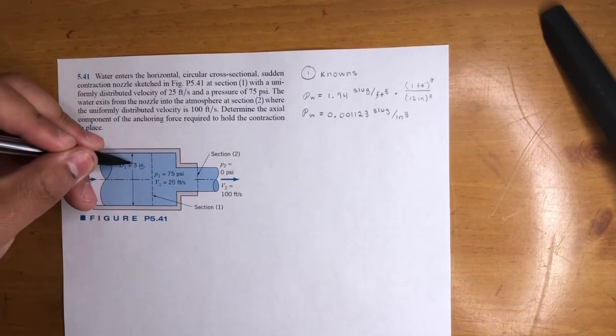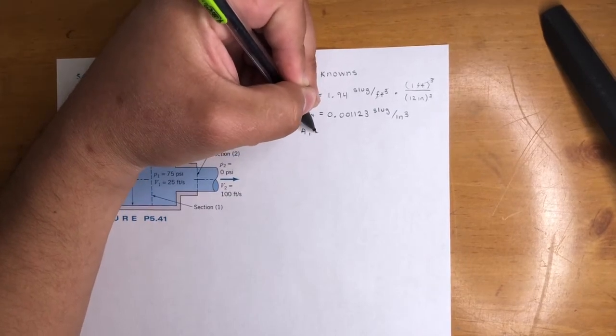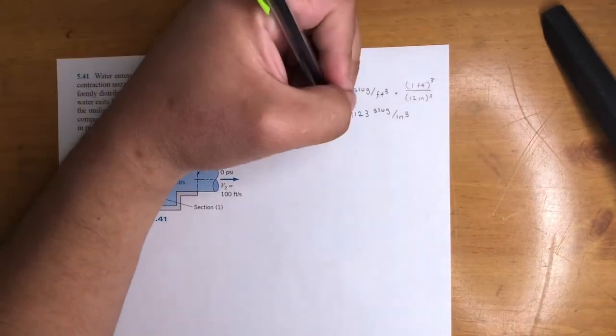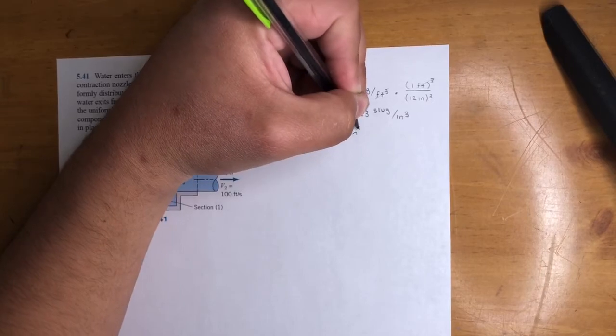They give us a diameter, three inches. So the area is pi r squared, 1.5 squared times pi. That will give you 7.07 inches squared.